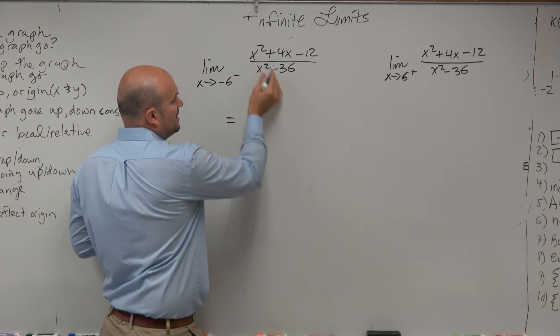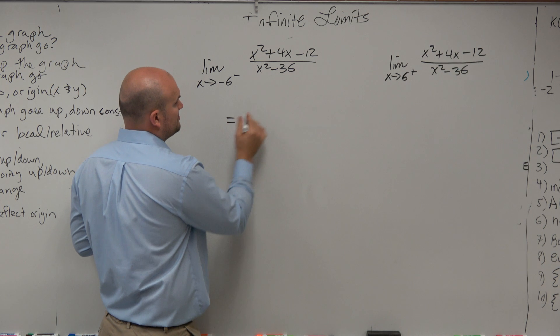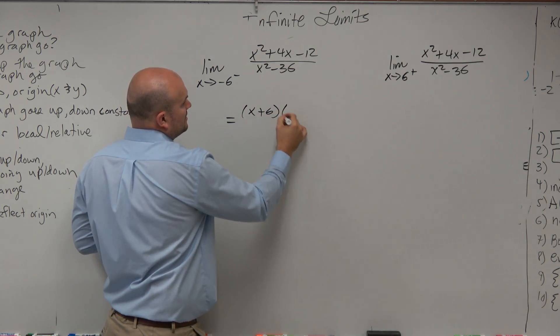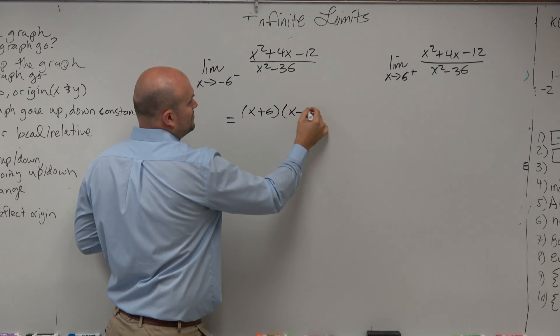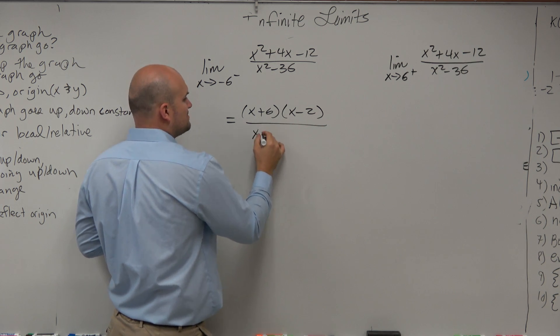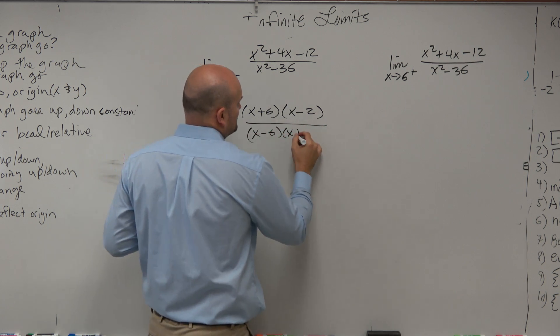So when we go ahead and factor this, factor the numerator, let's see, we're going to be dealing with x plus 6 times x minus 2. Factor my denominator, I'm going to have x minus 6 times x plus 6.